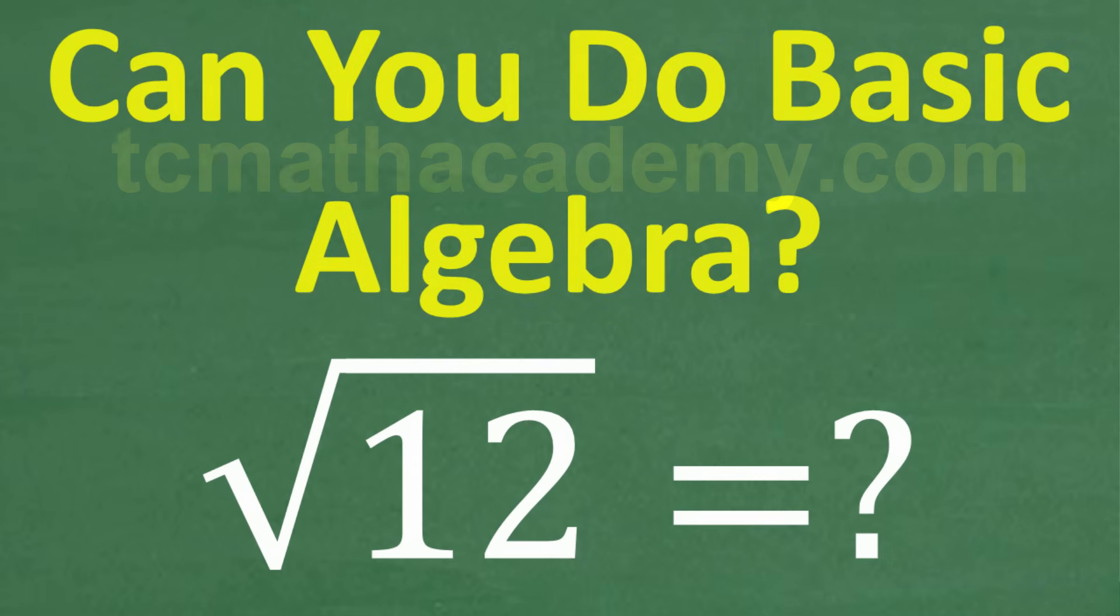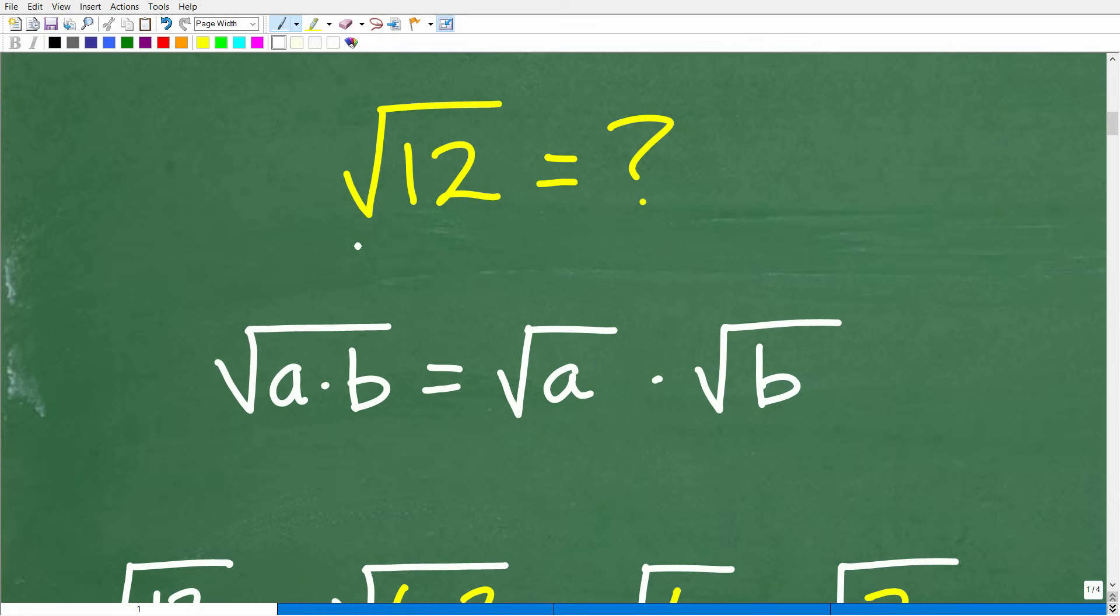All right, so let's go ahead and get into the solution to this problem. What we want to do here is simplify the square root of 12. Now, what does that mean? Well, if I gave you the fraction 100 over 200, would you turn that in as your final answer on a test or quiz?